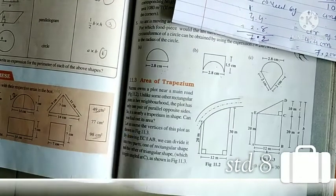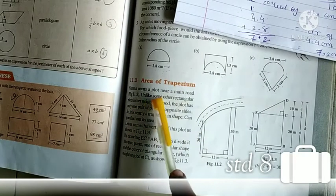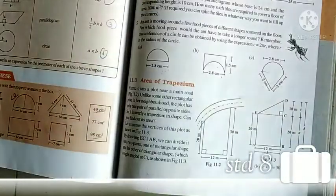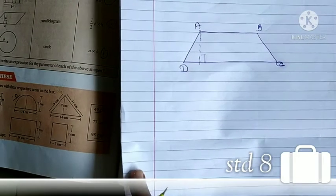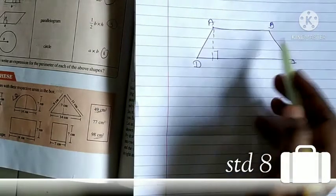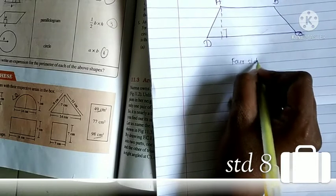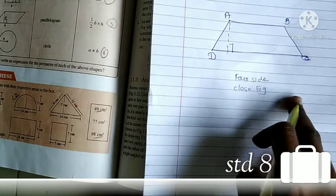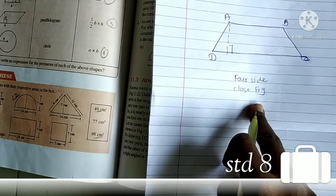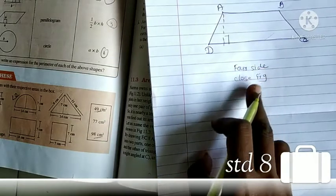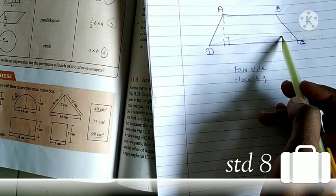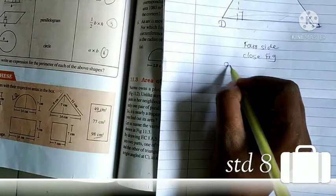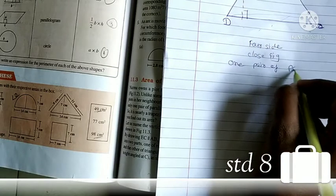Next, our topic is area of trapezium. What is area of trapezium? A trapezium is a four-sided closed figure — just like rectangle and square are also four-sided closed figures. But in a trapezium, one pair of opposite sides is parallel, okay?